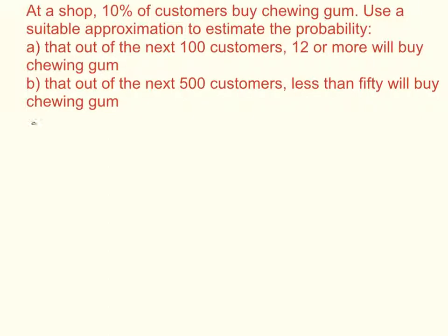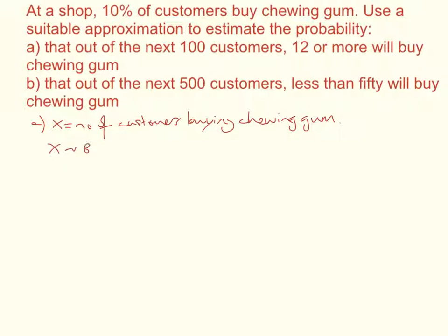Starting with part (a), let's define our random variable. X is the number of customers buying chewing gum, and X has a binomial distribution where n is 100 and the probability is 0.1. Now if we calculate n times p we get 10, so we can use the Poisson approximation. We say that X is approximately Y, where Y has a Poisson distribution with lambda equal to 10.